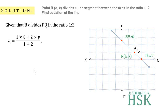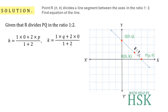So we can write h, the x-coordinate of this point, by applying the section formula: h = (1×0 + 2×p) / (1+2). Similarly, k = (1×q + 2×0) / (1+2). So I get h = 2p/3 and k = q/3.